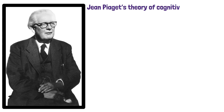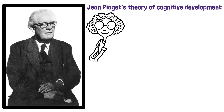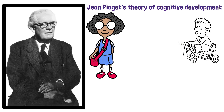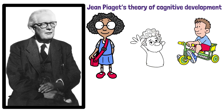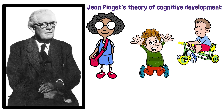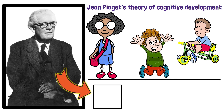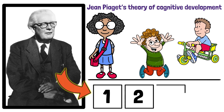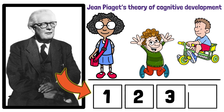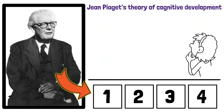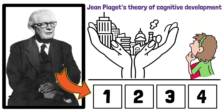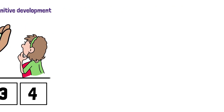Piaget's theory of cognitive development outlines how children actively construct knowledge through interaction with their environment. His theory is structured around four stages, each representing a different way of thinking and understanding the world.